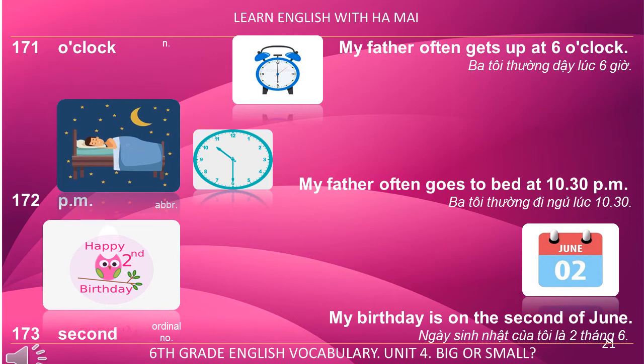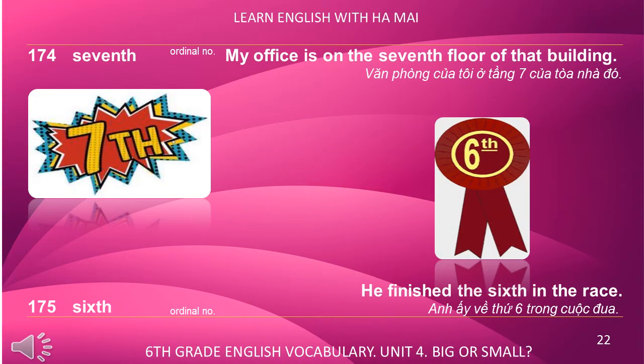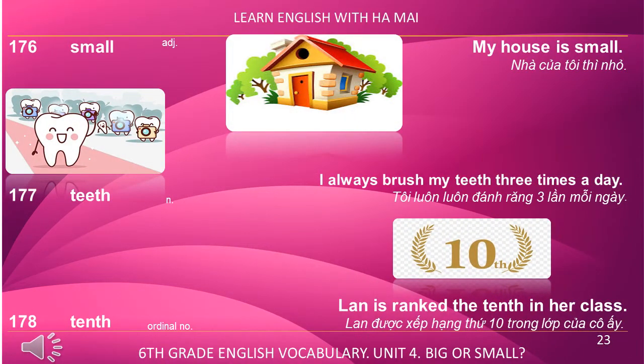Second. My birthday is on the 2nd of June. Seventh. My office is on the 7th floor of that building. Sixth. He finished 6th in the race. Small. My house is small.